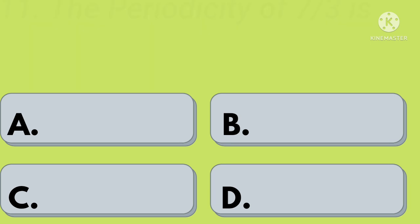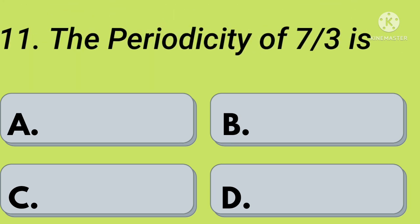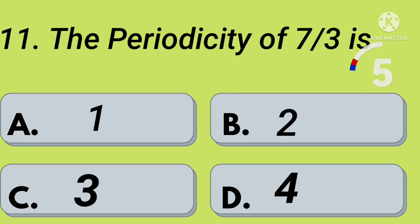Eleventh question: the periodicity of 7 by 3 is — option A: 1, option B: 2, option C: 3, option D: 4. Your time starts now. Right, option A: 1.